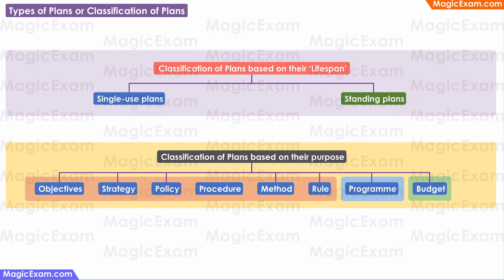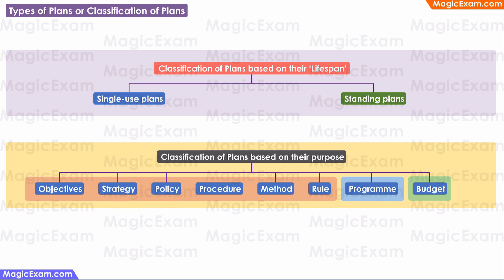Plans are also classified on the basis of their purpose. A plan can consist of objectives. It can be a strategy, a policy, a procedure, a method, or even a rule. A plan can also be a program, and even a budget is a type of plan.